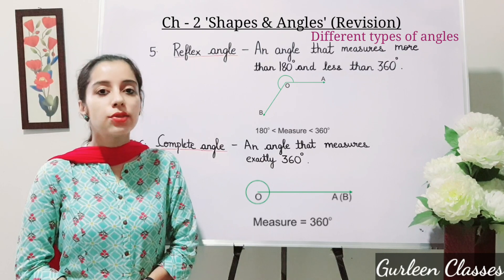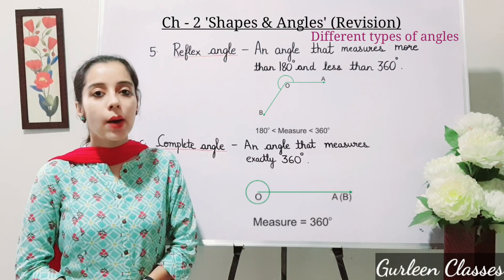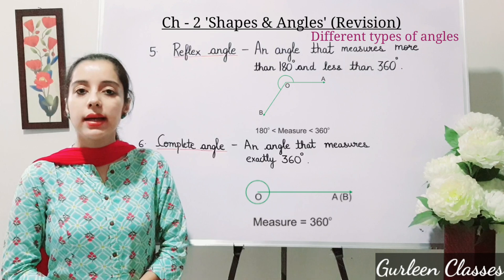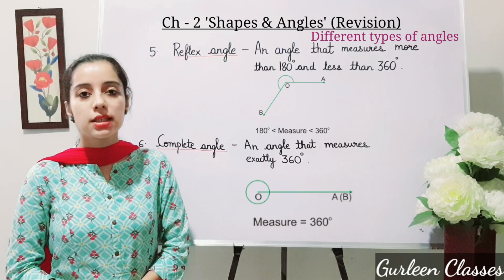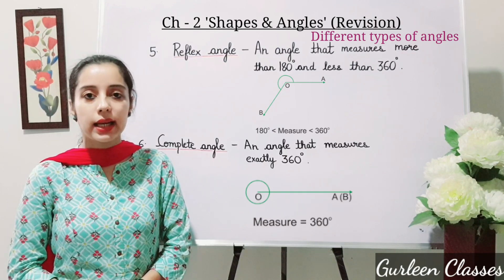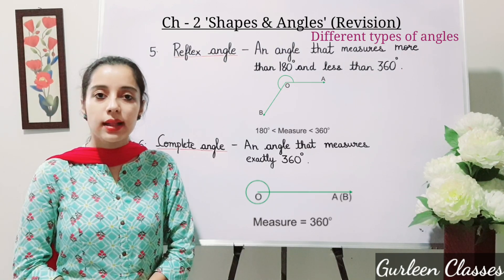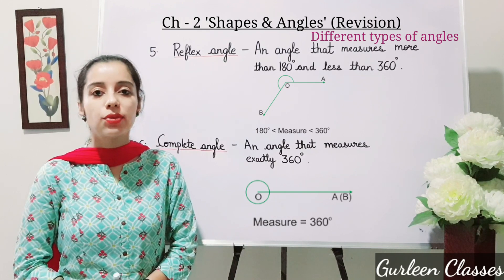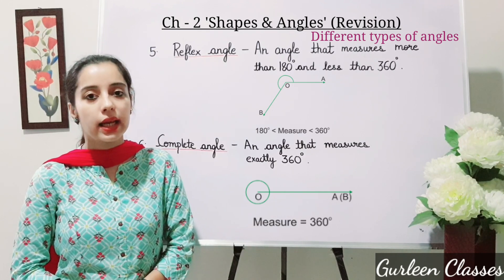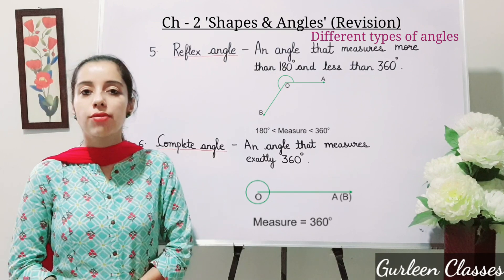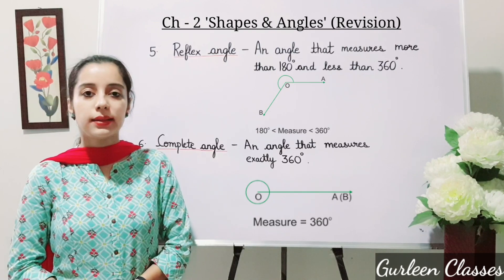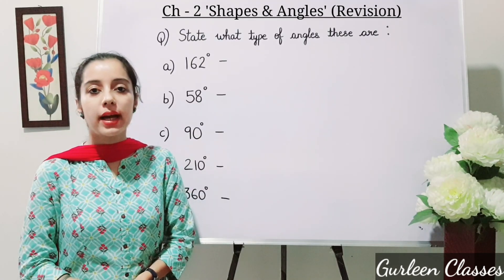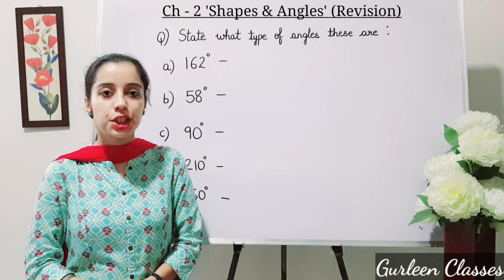Number six: Complete angle. An angle that measures exactly 360 degrees is called a complete angle. This is an example of a complete angle. Now let us do questions based on different types of angles.